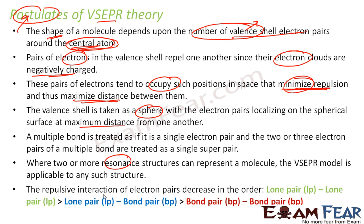An important concept in VSEPR is the distinction between lone pairs and bond pairs. The repulsion is highest for lone pair–lone pair interactions, next is lone pair–bond pair, and the least is bond pair–bond pair. If there are two lone pairs, they repel more strongly. We will discuss the reasons for this in the next section.